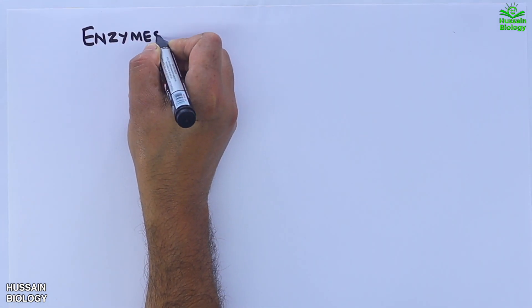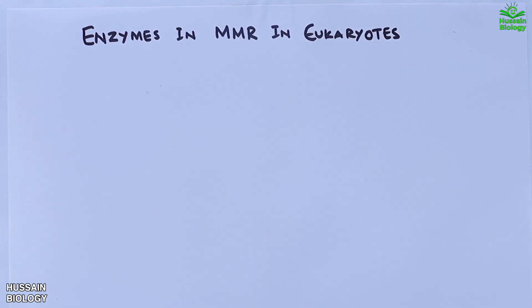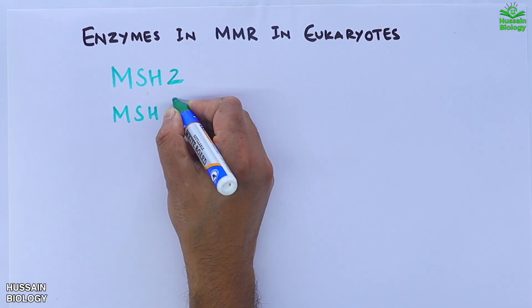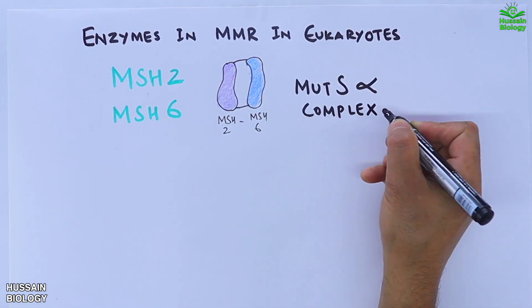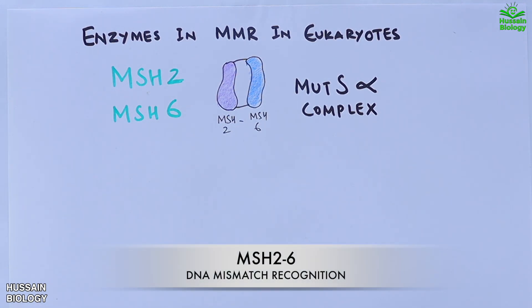Now before getting into the details, let's have a look at the enzymes needed for mismatch excision repair in eukaryotes. First we have MSH2 and MSH6, which we can see in the diagram. Together they form the MutSα complex, which scans the DNA and recognizes the mismatch site.